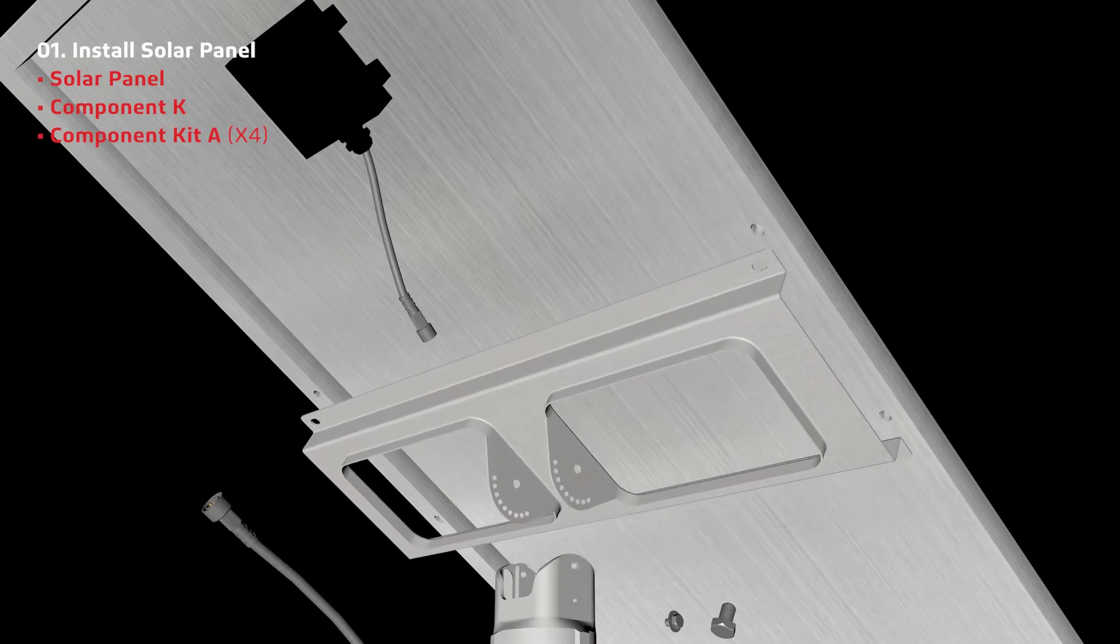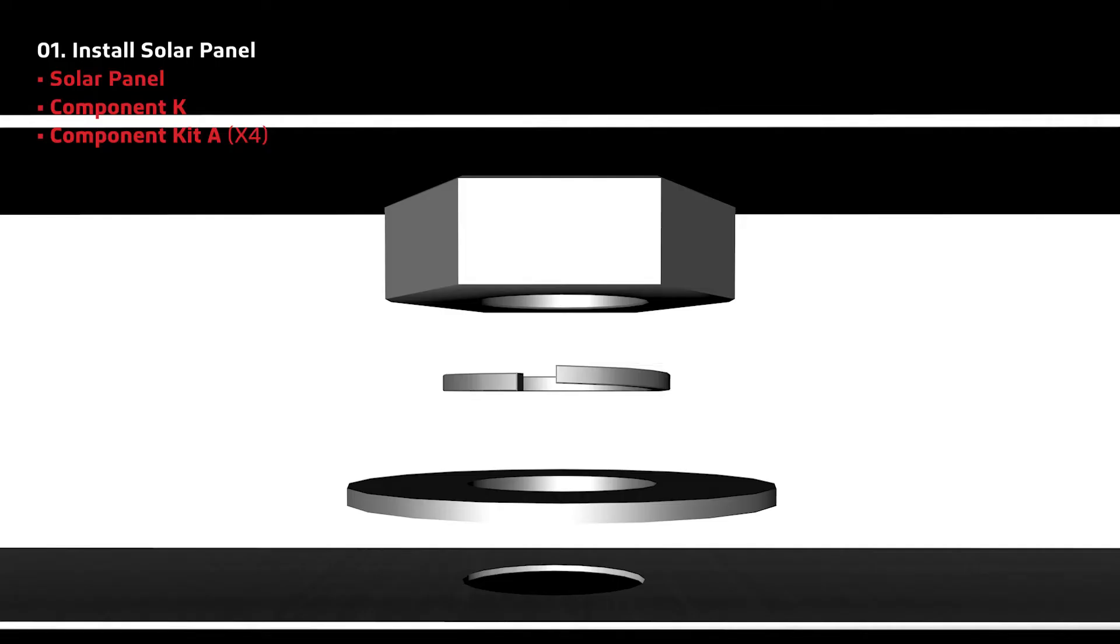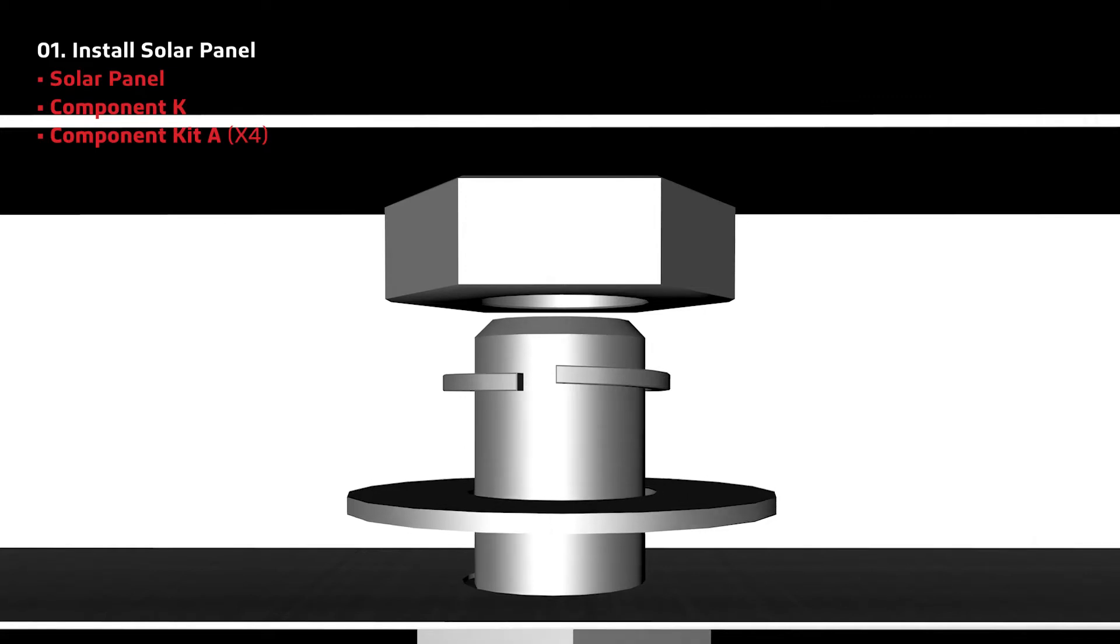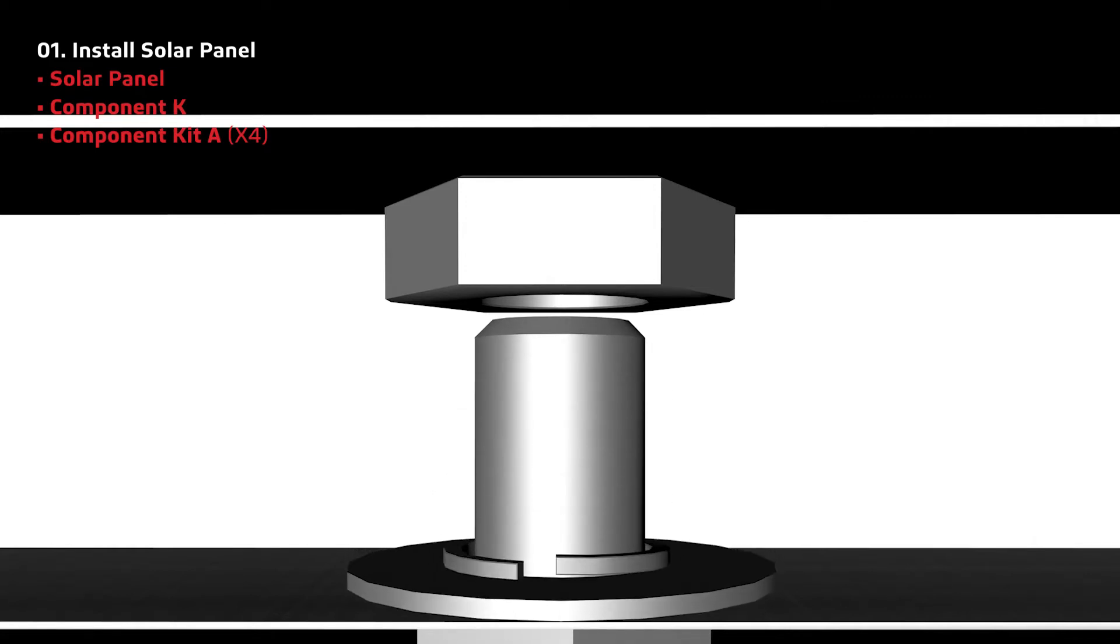First, attach component K to the solar panel using the four screws from component kit A. Secure the screws in this order.